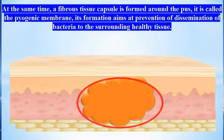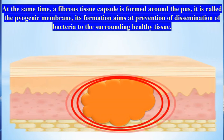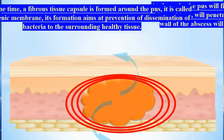At the same time, a fibrous tissue capsule is formed around the pus, called the pyogenic membrane. Its formation aims at prevention of dissemination of bacteria to the surrounding healthy tissue.